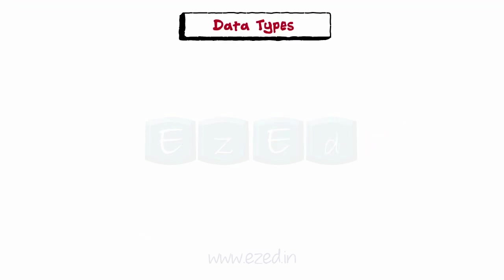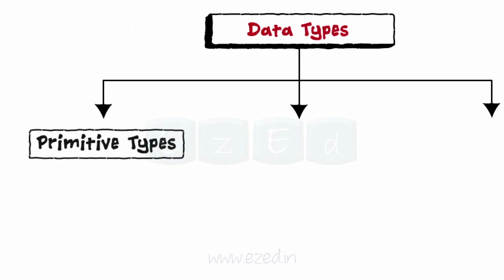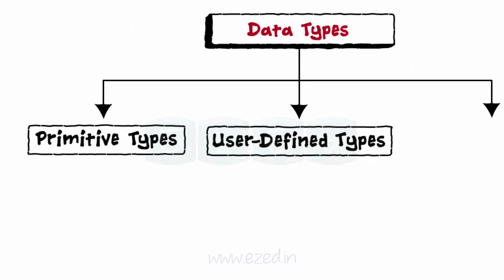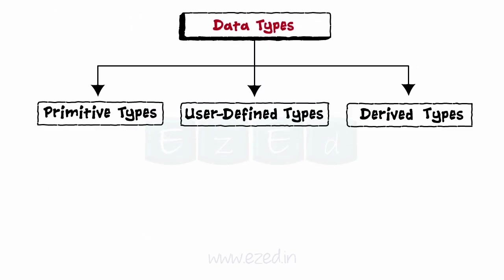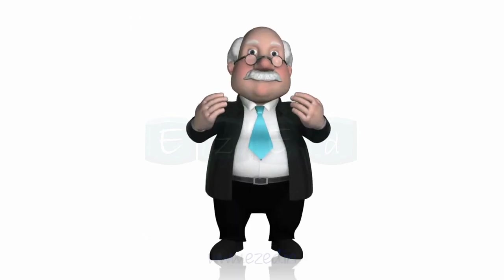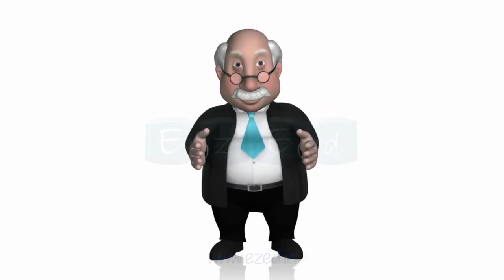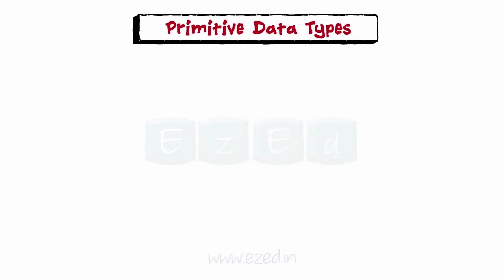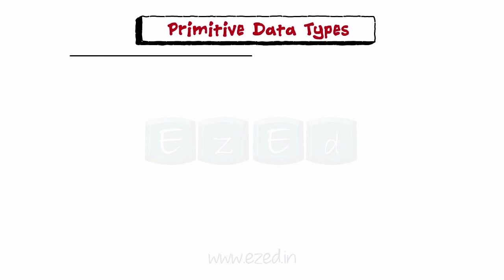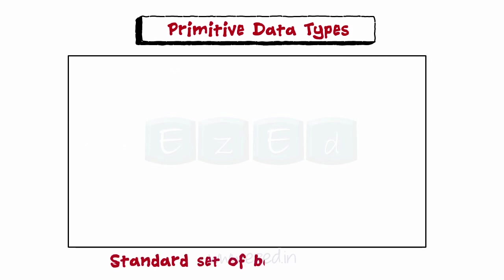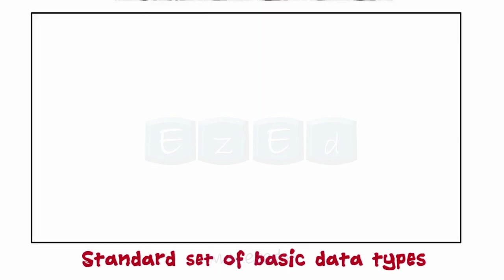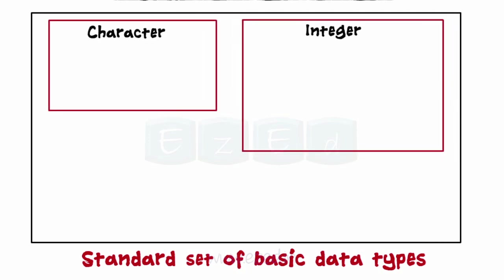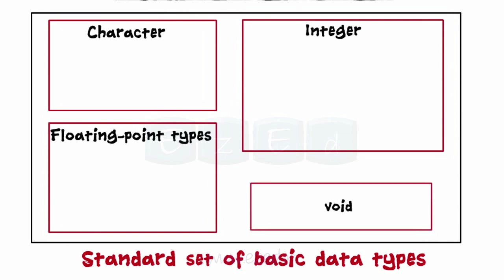Data types can be broadly classified into primitive types, user-defined types, or derived types. C provides a standard minimal set of basic data types. The fundamental data types are character, integer, floating point types, and void.